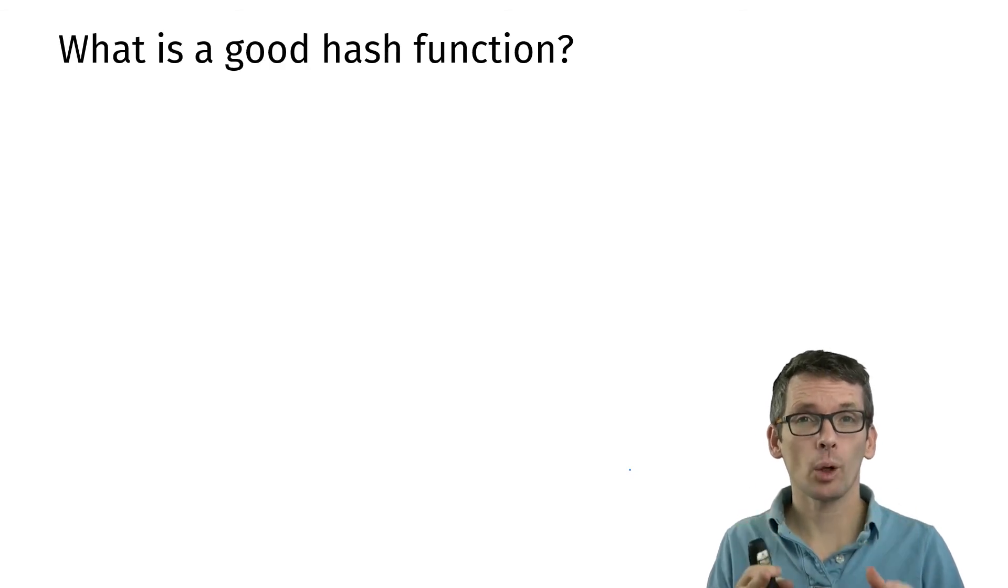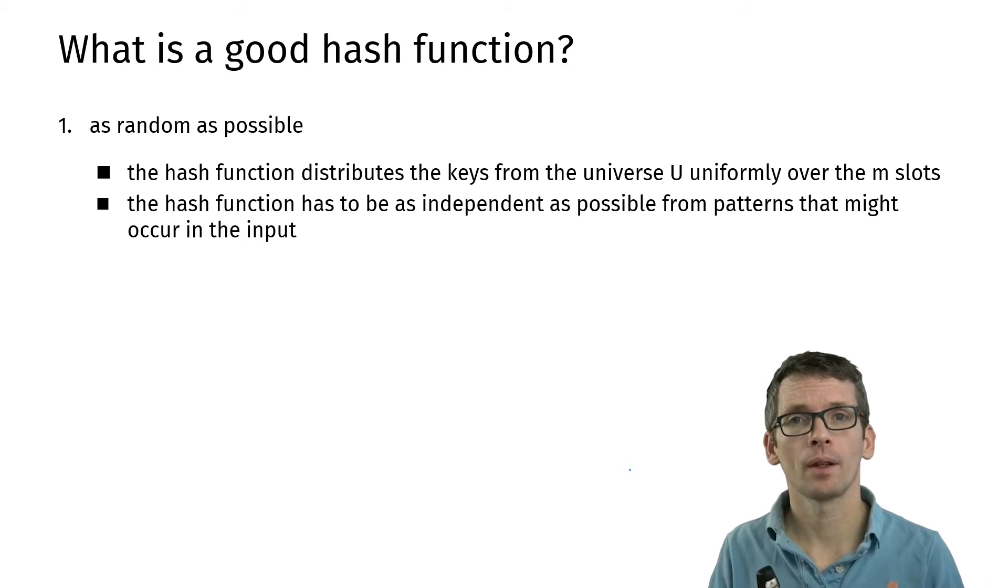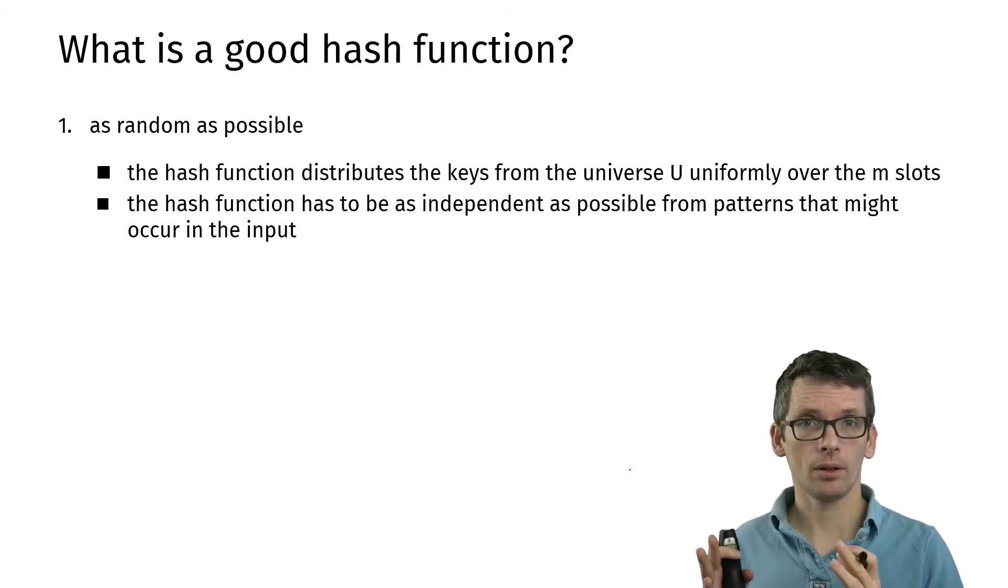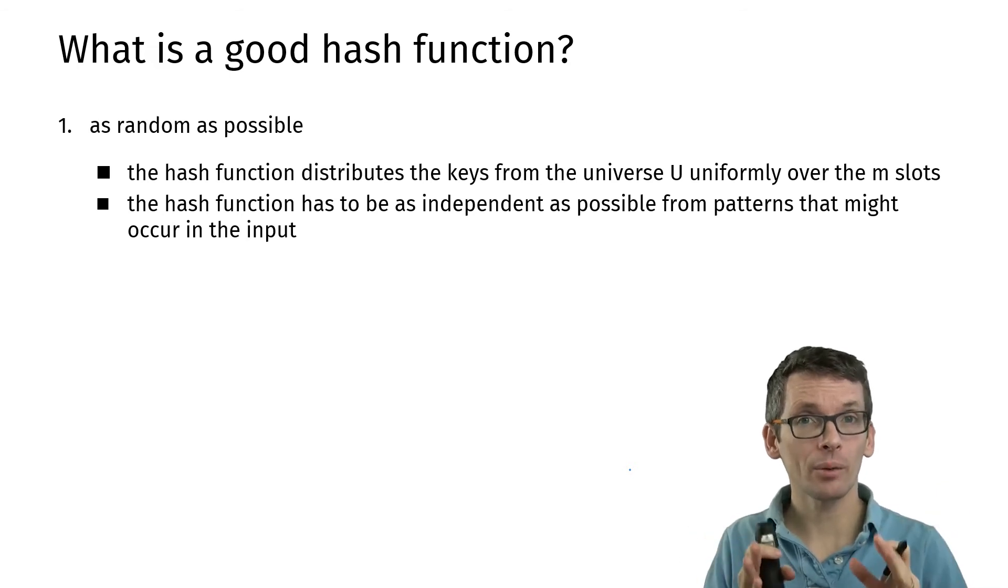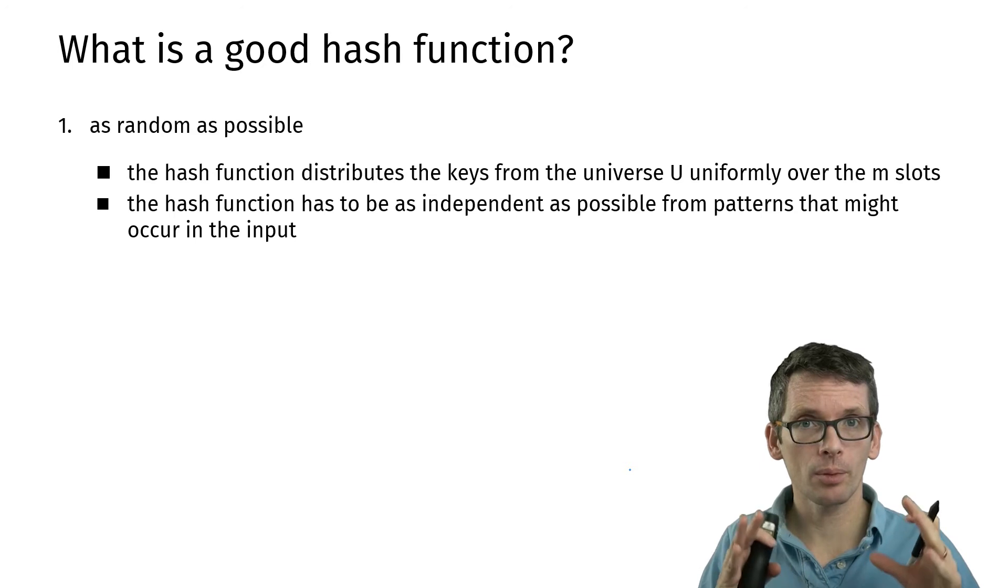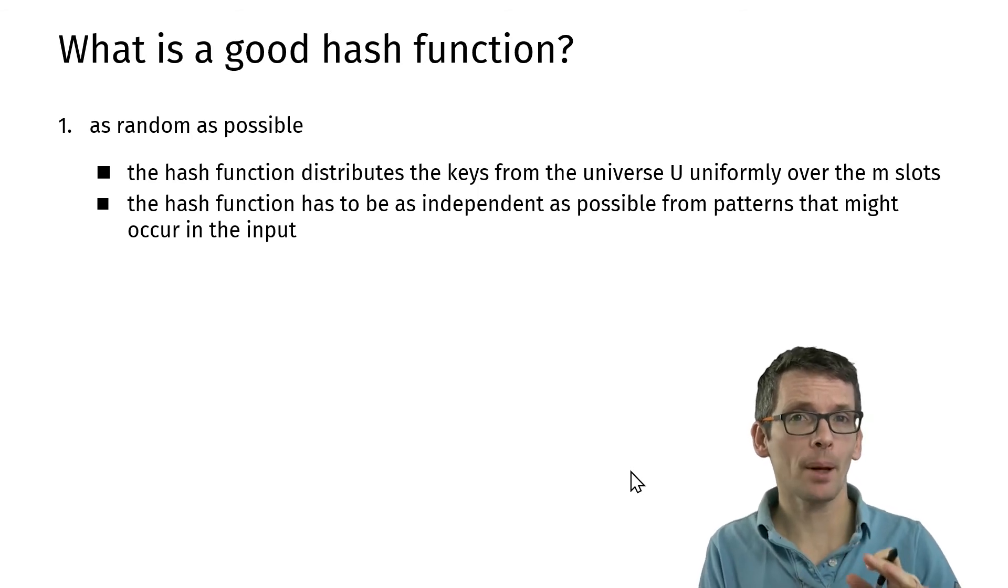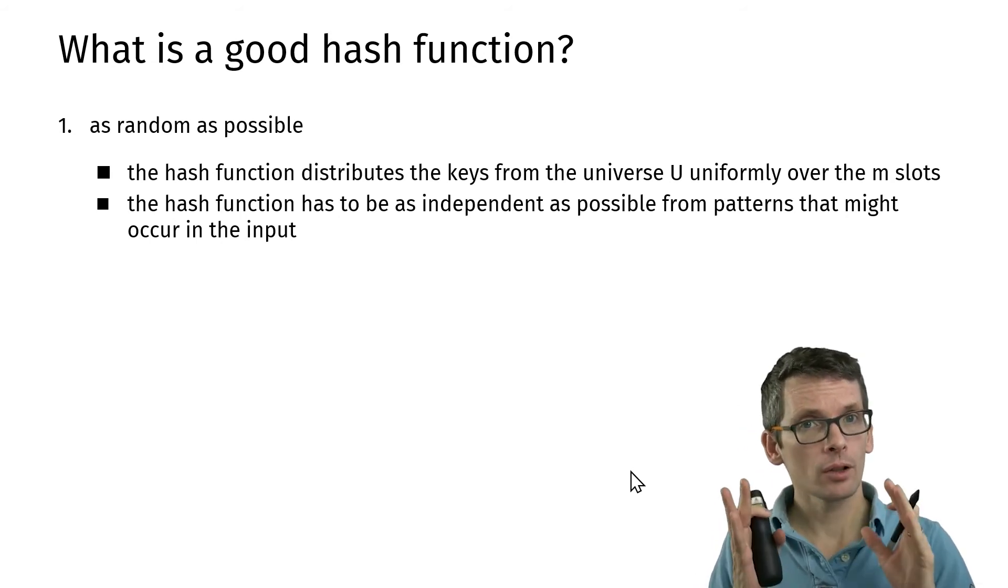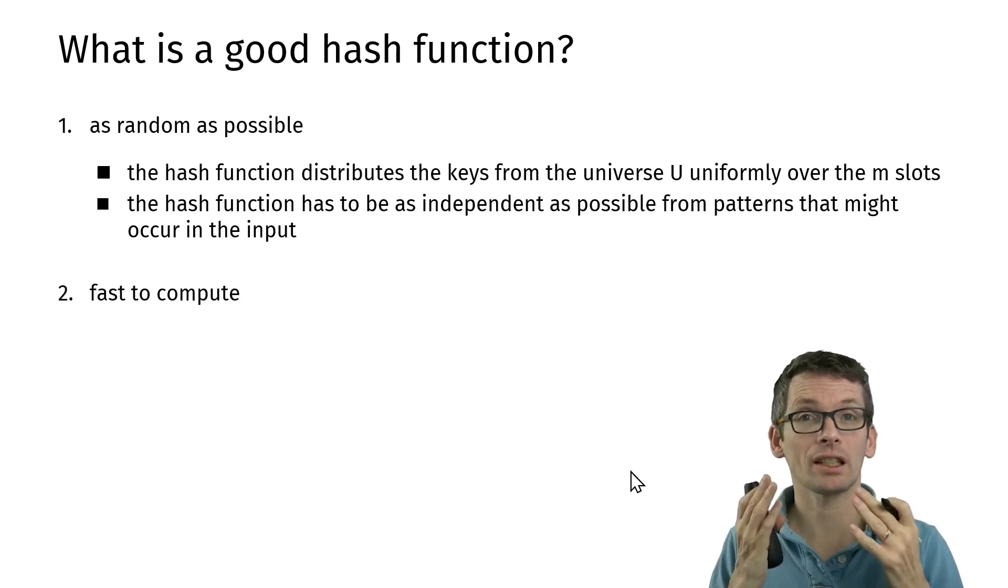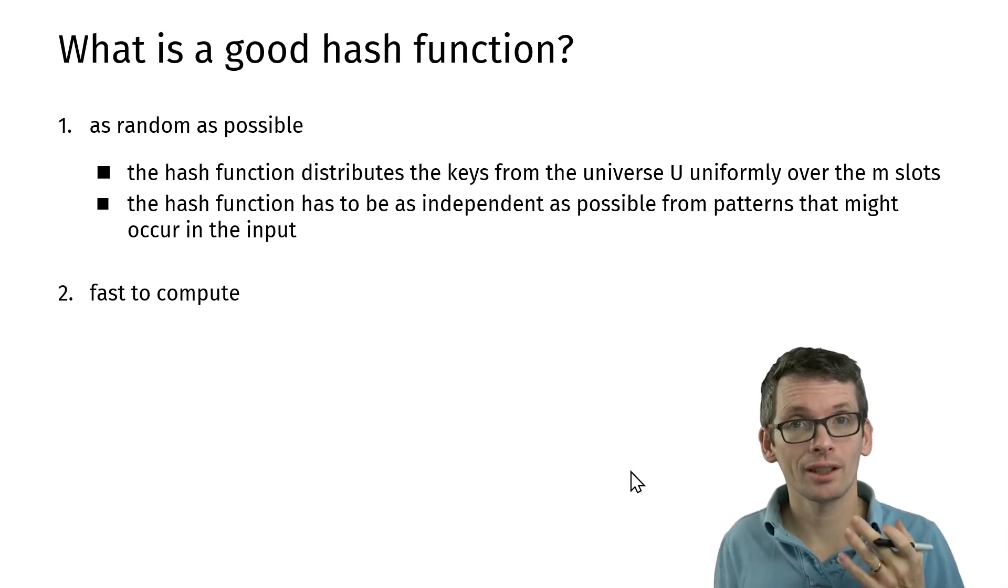So let's look at hash functions and what a good hash function is. We would like to distribute the keys from the universe as uniformly as possible over the hash table. For that, we would like to have a hash function that is as random as possible. When we are going to resolve collisions and see how to resolve collisions, we will see more of a theoretical background on why we actually want to have it as random as possible. But in principle, randomness gives us that the keys are nicely distributed. Also, that if there is some pattern hidden in the data, or not so hidden, the randomness breaks that pattern. That's the main condition. But of course, we also want to have a hash function that is fast to compute. If you spend more time computing the hash function than searching takes, that would defeat the purpose.